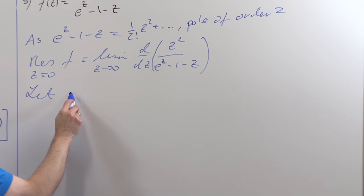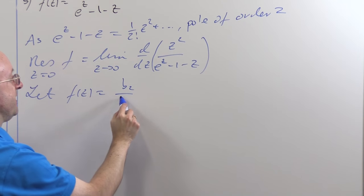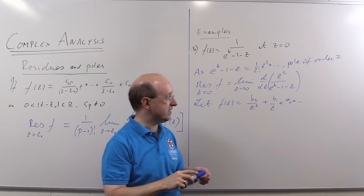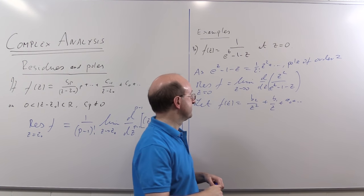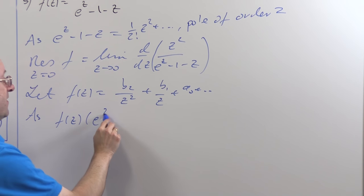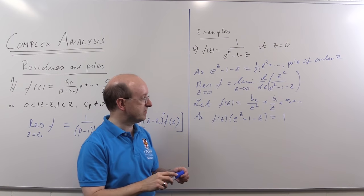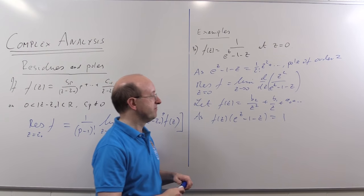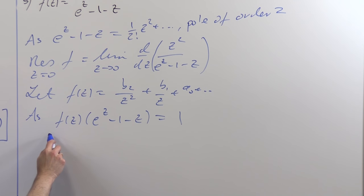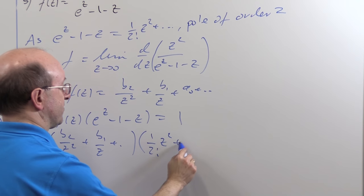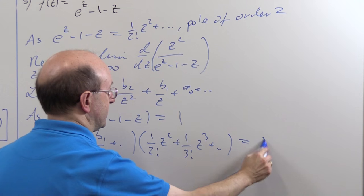So what we're going to do instead is actually find the series for this function F. We know it's a pole of order 2, so we know the shape of the series. And that's going to be enough. We say, let's let F of Z be, well, let's call it B2 over Z squared plus B1 over Z plus A0 plus and so on. B2 is not 0, B1 is the thing we want. Then, as F of Z times E to the Z minus 1 minus Z is simply 1, we know the series for that. We've written down the shape for the series of that. We just pick out the term that we want, B1 in other words.